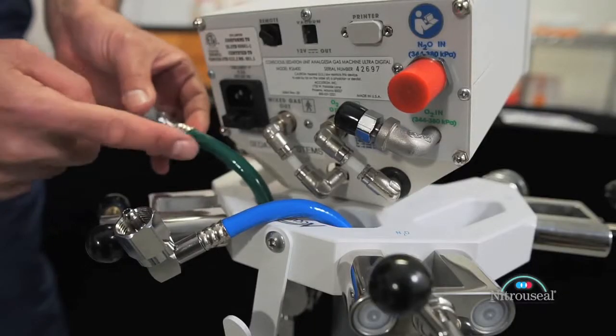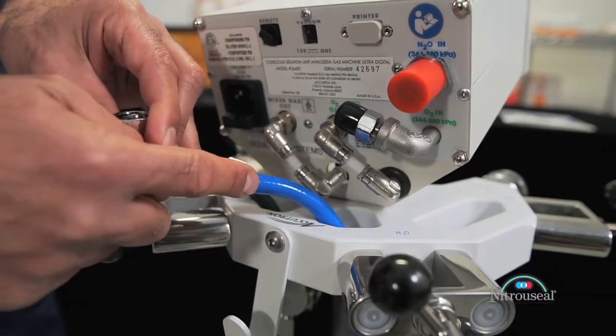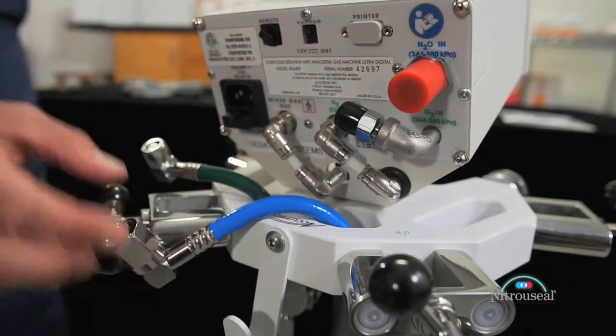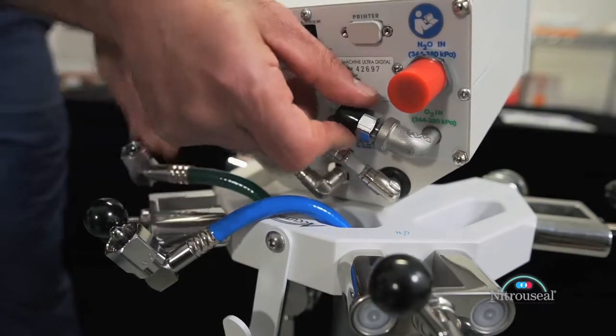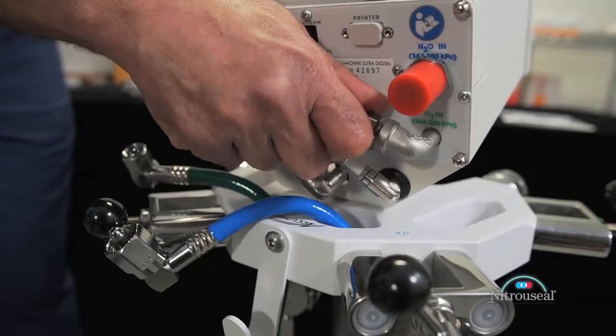Next, attach the gas supply hoses to their respective input sockets on the back of the flow meter. There are two hoses, a green one for oxygen and a blue one for nitrous oxide. Each hose has an end coupling that fits only its corresponding input socket on the flow meter to assure the correct coupling arrangement.